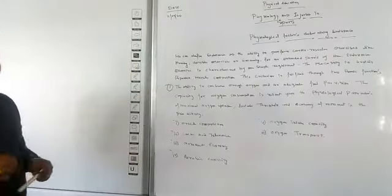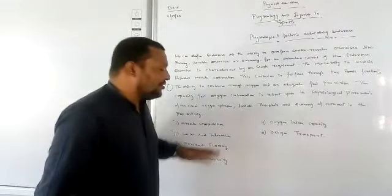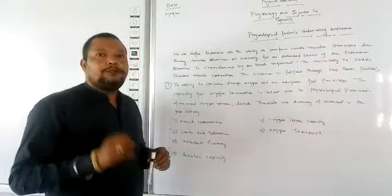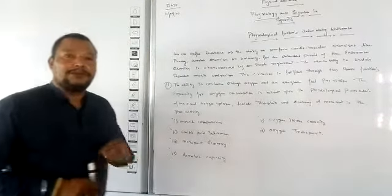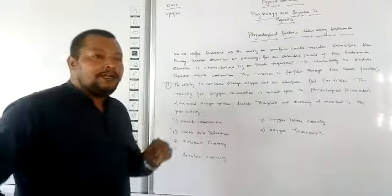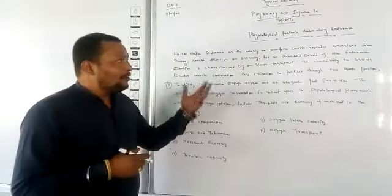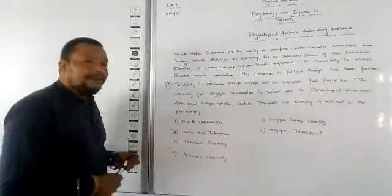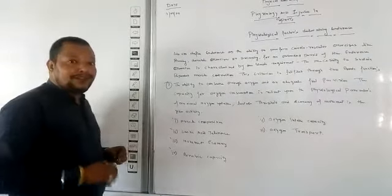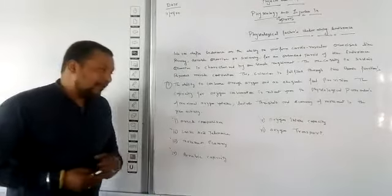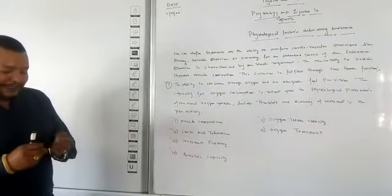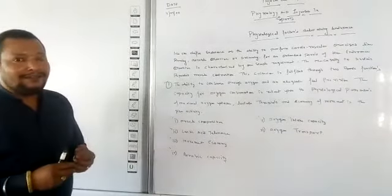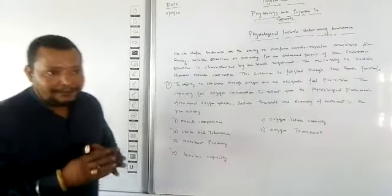There are six physiological factors determining endurance. Number one is muscle composition. It is basically related with red muscle fibers and white muscle fibers. In endurance we require the maximum percentage of red muscle fibers because they have the ability to release energy in a slow manner. For longer duration endurance activities we require this kind of muscle composition — specifically red muscle fibers, also called slow-twitch muscle fibers. Studies have proven that marathon runners have 90% red muscle fiber composition in their legs.